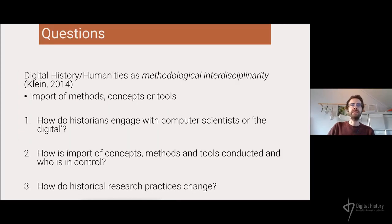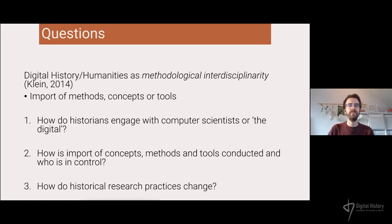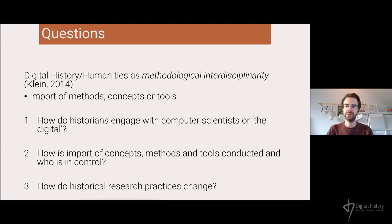The question I started with comes from Judy Thompson Klein's book on digital humanities — I use digital humanities as a larger term of which digital history is part — where she characterized it as methodological interdisciplinarity: historians importing methods, concepts, and tools from other disciplines like computational sciences to aid their own research. My questions were: how do historians engage with computer scientists or the digital at large? How is this import of concepts, methods, and tools conducted, and who is in control? And finally, how do historical research practices change — do historians start working differently, or are they more or less doing the same things with small accents?